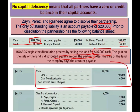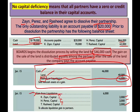Let's journalize the land sale. We debit cash $46,000, credit land, and record a gain of $6,000. This gain will be closed out to the various partner accounts. Since it's allocated equally, each partner gets $2,000 — we increase Zane's capital account by $2,000, Perez's capital account by $2,000, and Rashid's capital account by $2,000. We debit the gain to close it, so the gain is gone and each partner's capital went up by $2,000.